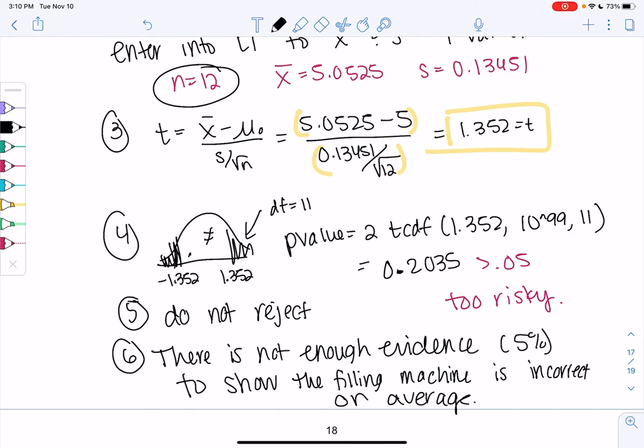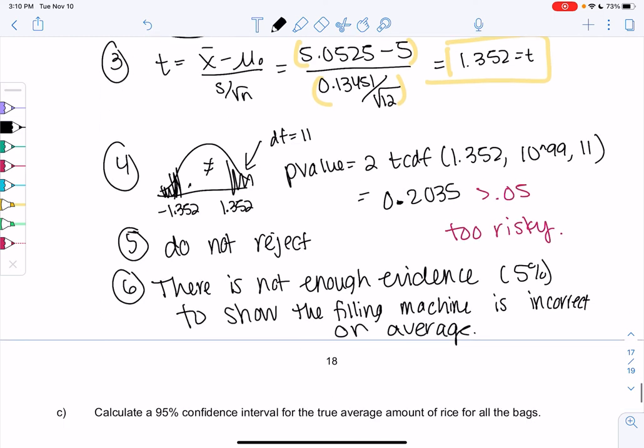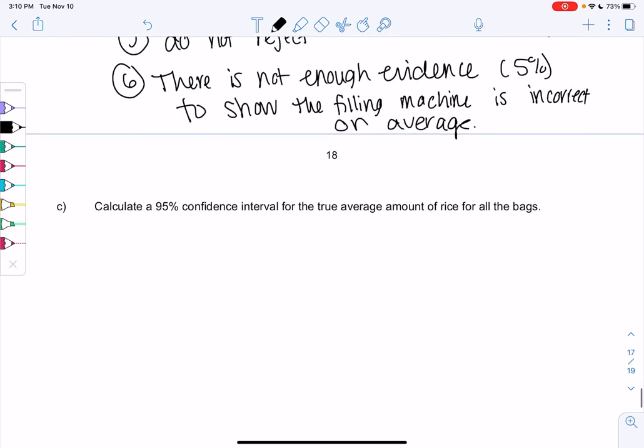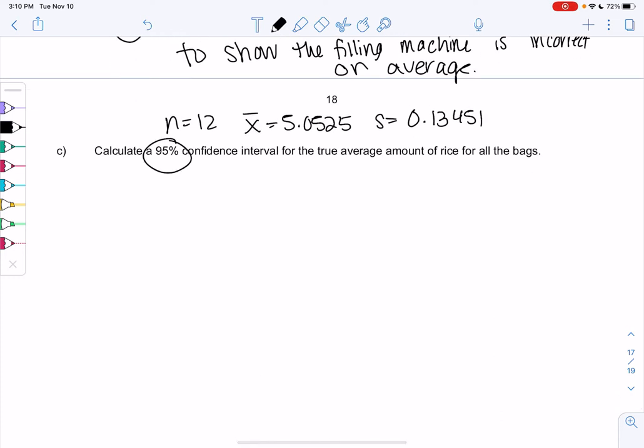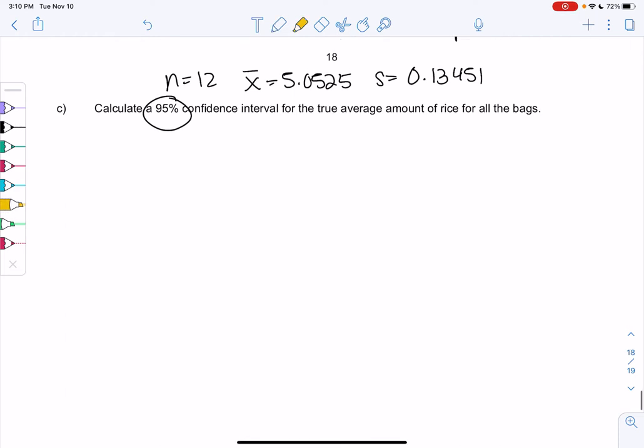We'll do one more confidence interval and compare just to get more practice with that. N was 12, X̄ was 5.0525, and S was 0.13451. This time we'll create a 95% confidence interval to show the true average amount of rice for all the bags. We're in mean land.